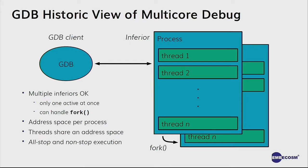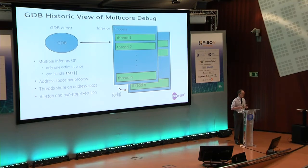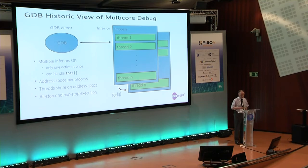Historically, GDB's concept of parallelism looks very Linux-like. GDB talks to what it calls inferiors — the thing you're debugging. Historically you could have many inferiors, but could only be debugging one at a time; only one would be active. There was some extra support for fork, giving you the option of following the parent or the child. GDB knew about processes with an address space, and threads within processes that share address spaces. It has a concept of flow of control: either all threads stop when you hit a breakpoint, or just the thread with the breakpoint stops — which leads to a requirement for asynchronous operation of GDB.